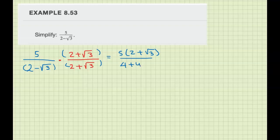We get four plus two square root of three, minus two square root of three, then minus square root of nine. These cross out.